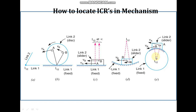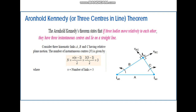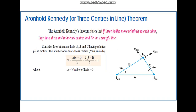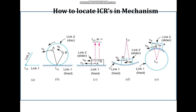If the slider is moving along a curved path, the ICR will be at the center of curvature — that is, at the radius of curvature of the curve. To summarize: if two links are connected, their ICR is at the joint; if a disc is rolling, ICR is at the point of contact; if a slider moves on a straight path, ICR is perpendicular to the path; if the path is curved, ICR is at the center of curvature. We have covered what ICR is, its types, Kennedy's theorem, and how to locate ICRs in different cases.